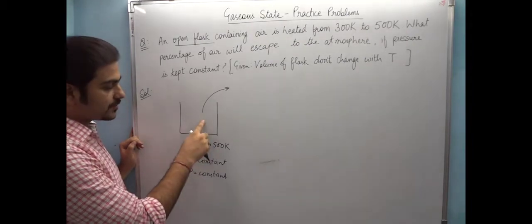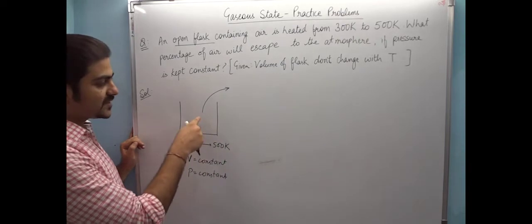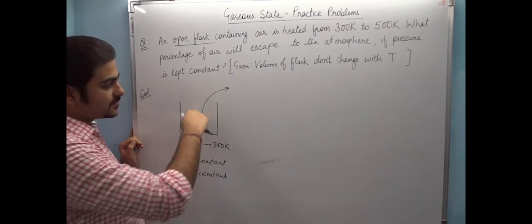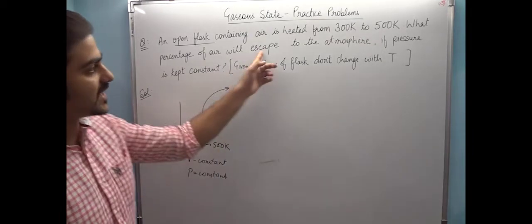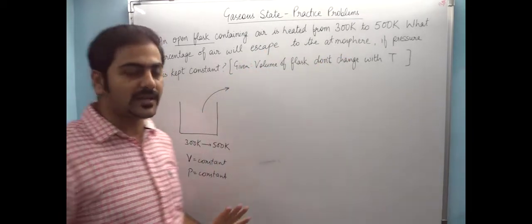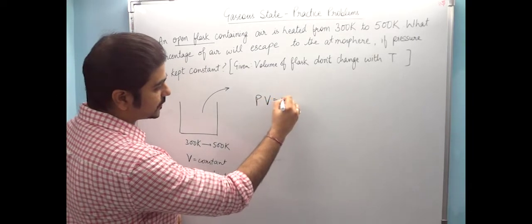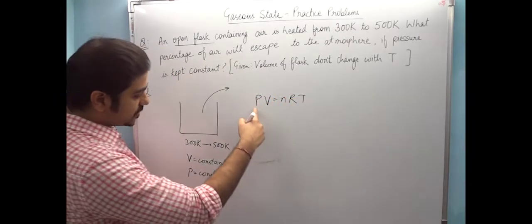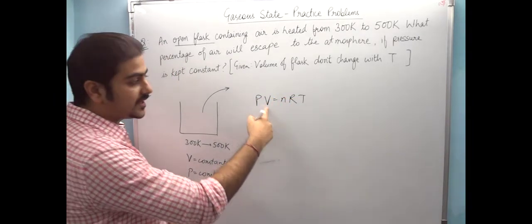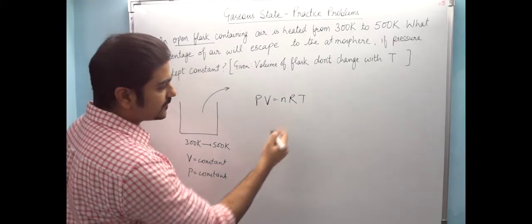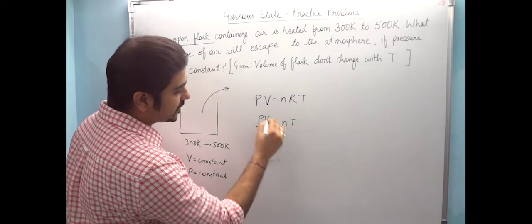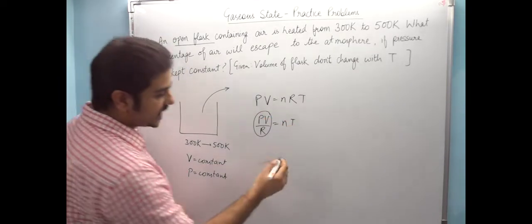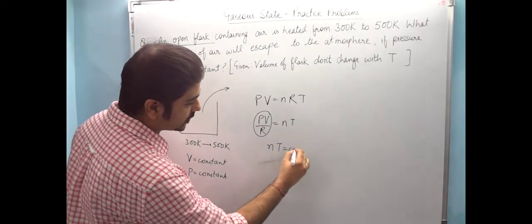...the pressure will increase, but when pressure increases, the gas will go out, so the amount of gas will escape. We can explain this with the simple formula PV = nRT. Pressure constant, volume constant, R is constant - so effectively PV/R = nT. These three are constants, so nT is equal to constant. That means n1T1 = n2T2.